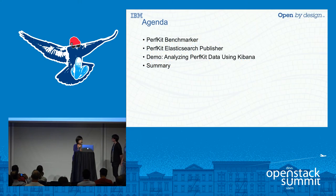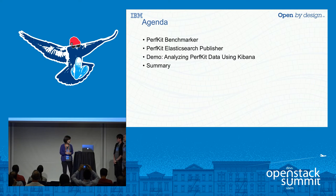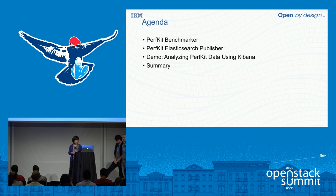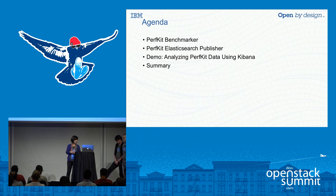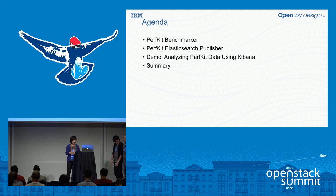To start with, let's go through the agenda for today. We'll first give an introduction and some detail about PerfKit performance benchmark itself. We will then introduce a tool that we have implemented named PerfKit Elasticsearch Publisher — the tool used to send and analyze results. Then we'll have a demo of how you would use the publisher and Kibana to analyze the data, a quick summary, and then wrap up today's session.